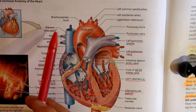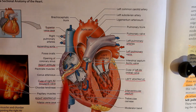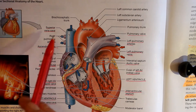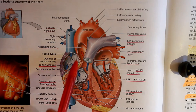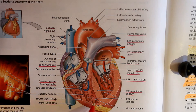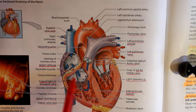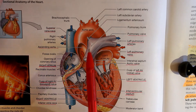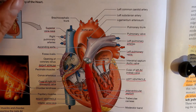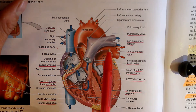Blood flows in through the superior vena cava as well as the inferior vena cava. This is deoxygenated blood that comes from the brain and from the body. The blood flows into the right atrium, then goes to the right ventricle by flowing through the atrioventricular or tricuspid valve. Then the right ventricle contracts, pushing blood through the pulmonary valve into the pulmonary artery. This is one of the few arteries that carries deoxygenated blood, and it goes to the right and left lung.